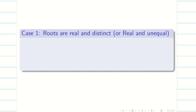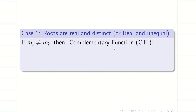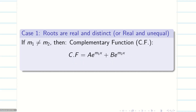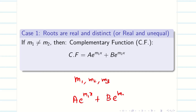When the roots are real and distinct — m₁ ≠ m₂ — the complementary function is: CF = A·eᵐ¹ˣ + B·eᵐ²ˣ. You can extend this: if m₁, m₂, m₃ are three different roots, then CF = A·eᵐ¹ˣ + B·eᵐ²ˣ + C·eᵐ³ˣ.